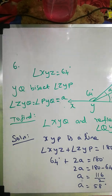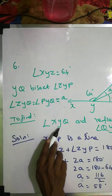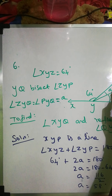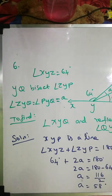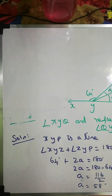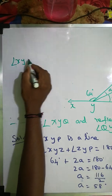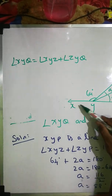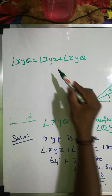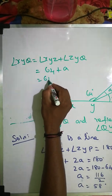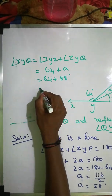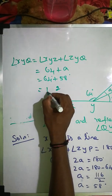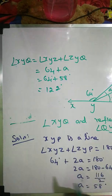Now we find angle XYQ. Angle XYQ equals angle XYZ plus angle ZYQ. That is 64 plus A, and A equals 58 degrees. So angle XYQ equals 64 plus 58, which equals 122 degrees.